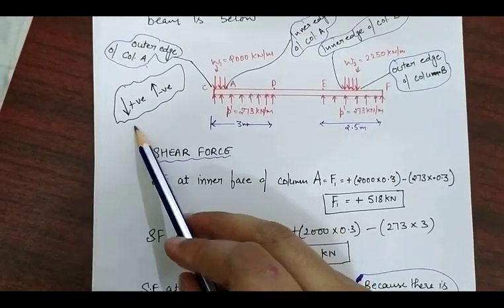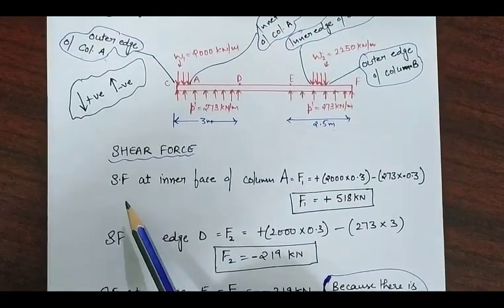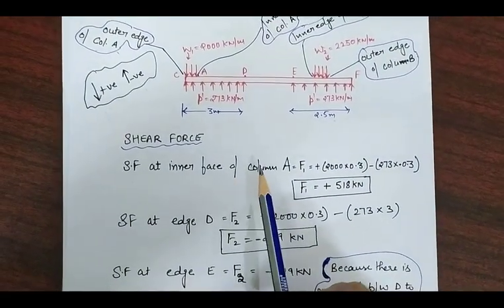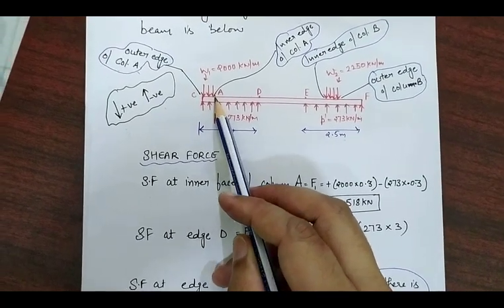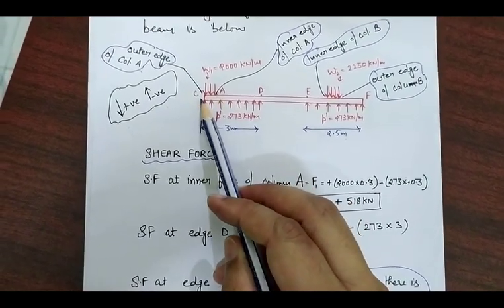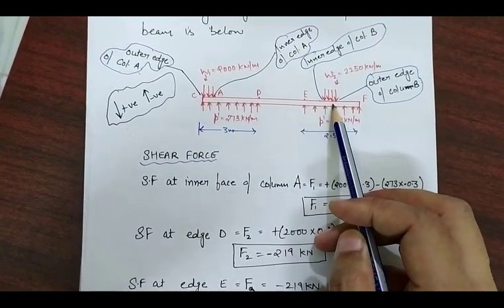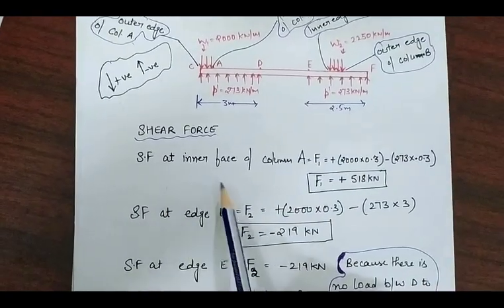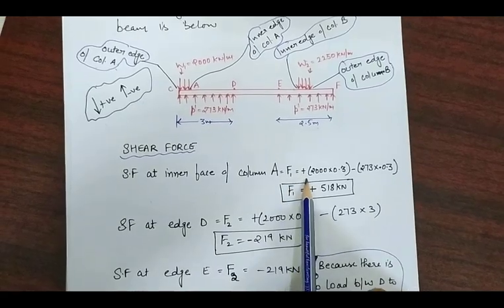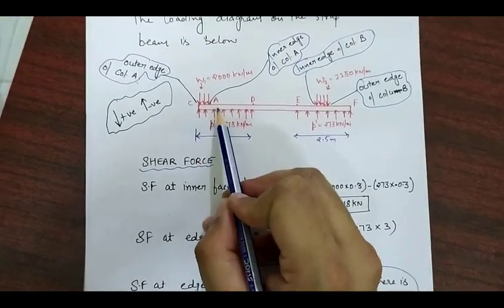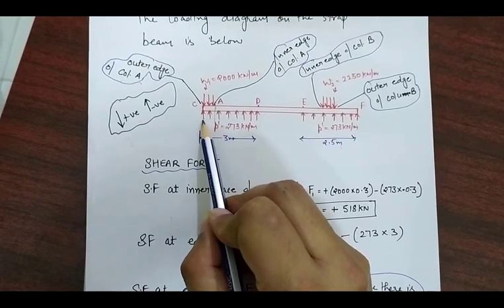For shear force calculation, all downward forces will be taken as positive and upward forces as negative. We will calculate the shear force at the critical points: first at the inner face of column A, then outer edge of column A, inner edge of column B, and outer edge of column B. At the inner face of column A, we look at which loads are acting up to that position.